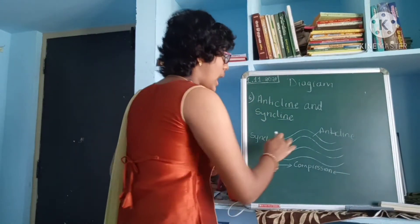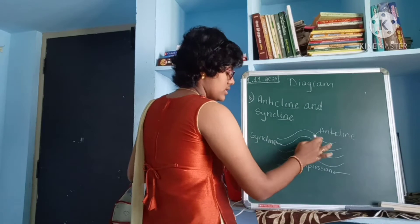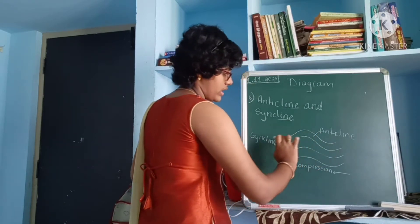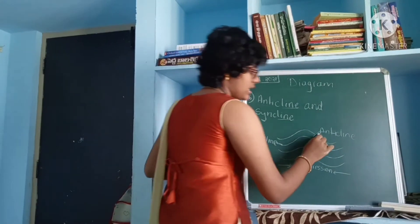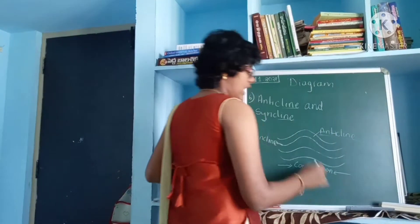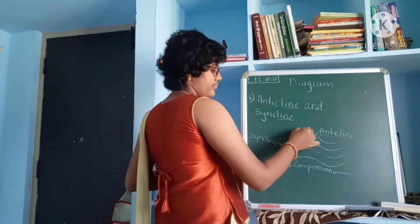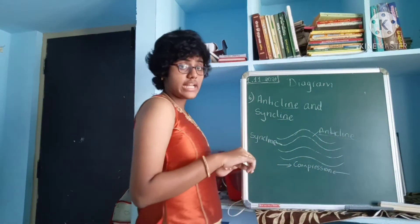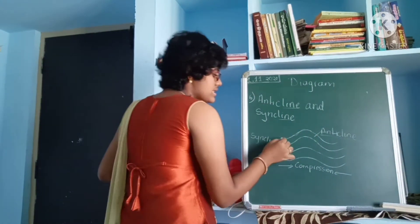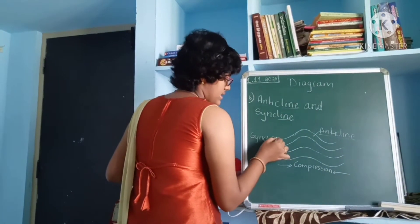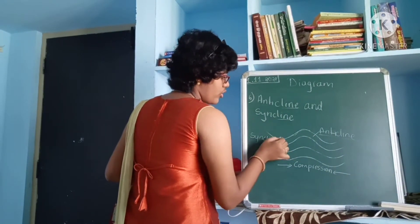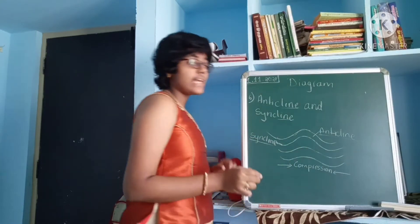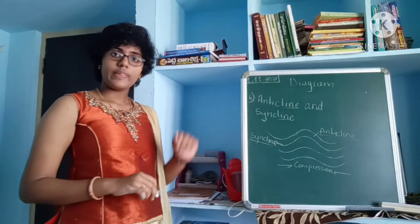The upper ones, whatever is swollen upward, are known as the anticline — the upper fold is known as the anticline. And the lower ones are known as the syncline.